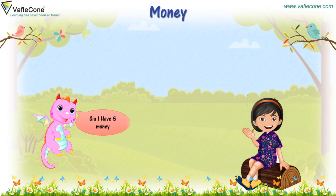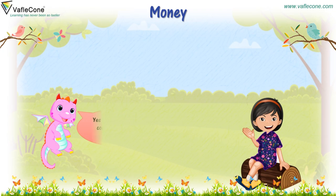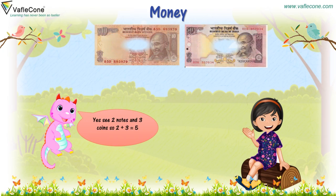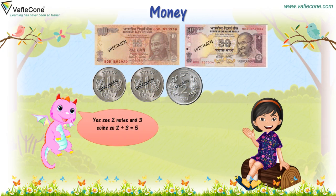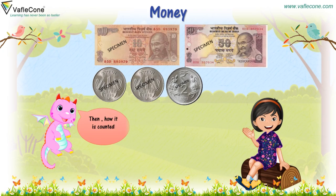Jia, I have 5 money. 5 money? Yes, see — 2 notes and 3 coins. So, 2 plus 3 is equal to 5. Oh, Dodo, money is not counted like this. Then how is it counted? I will tell you.